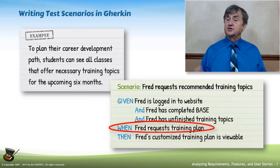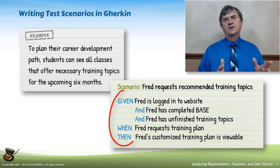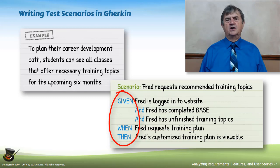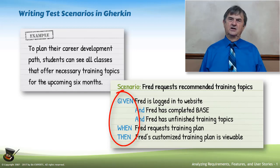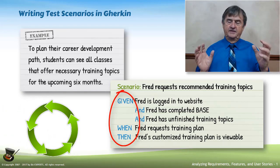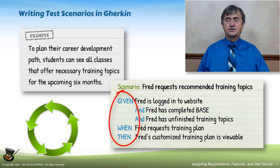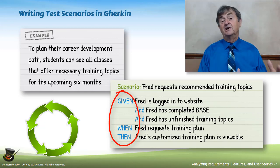When Fred requests a training plan — this is the action that triggers this particular test scenario. Then — and 'then' is the outcome — Fred's customized training plan is viewable. The Given When Then format is a very basic, simple structure that we're going to use to express all of our test scenarios. Properly written, the GWT — or Given When Then — is going to be executed time and time again. Every time a developer makes a change to the application, all the old test scenarios are going to be run again in regression tests, proving that we added new functionality without breaking anything else.